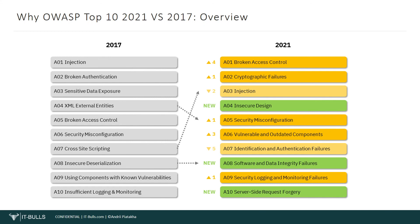Server-Side Request Forgery is added from the top 10 community survey. The data shows a relatively low incidence rate with above-average testing coverage, along with above-average ratings for exploit and impact potential. To draw the line under the comparison of OWASP Top 10 2021 and 2017: some categories were merged into one — for example, cross-site scripting is merged into injection, XML external entities is merged into security misconfiguration, insecure deserialization was renamed to software and data integrity failures — other vulnerabilities have been assigned different rankings.